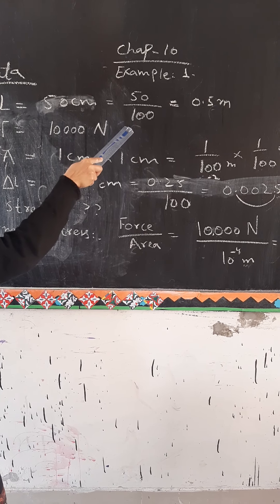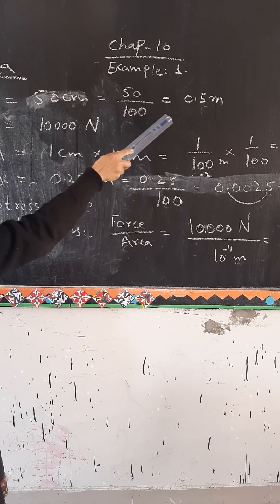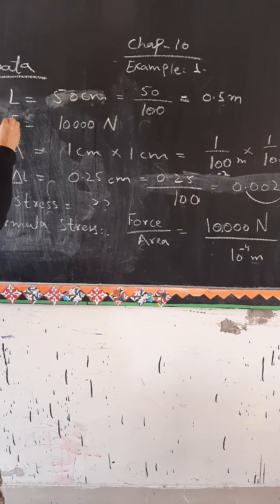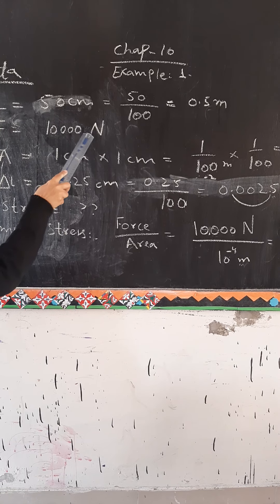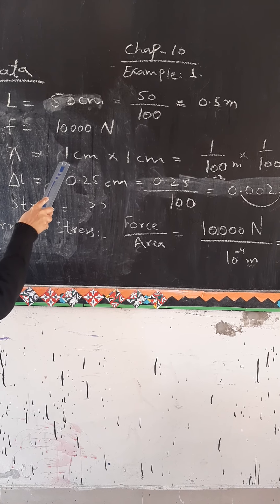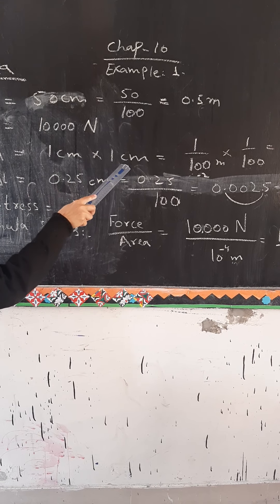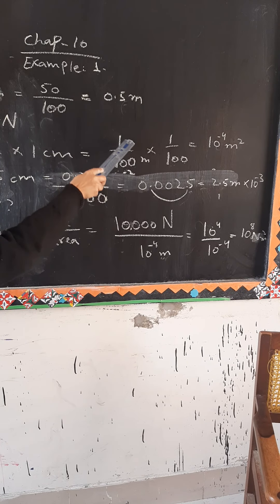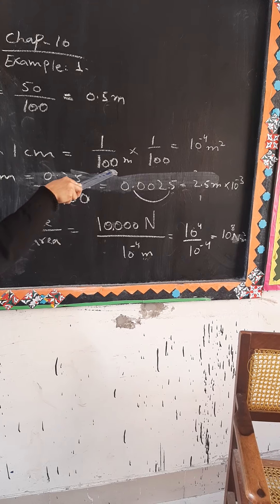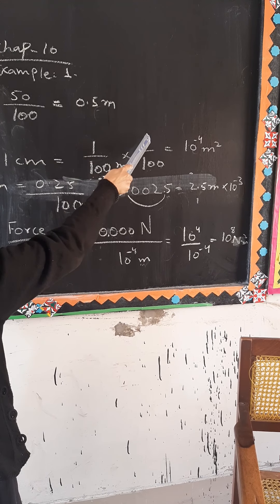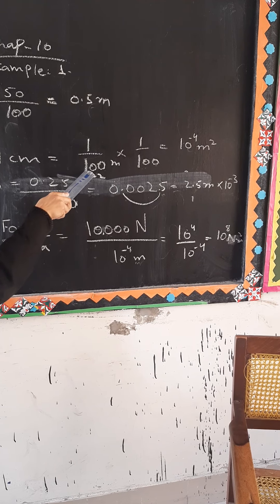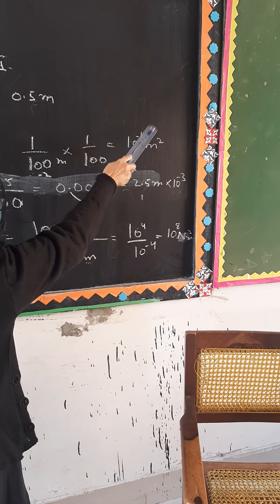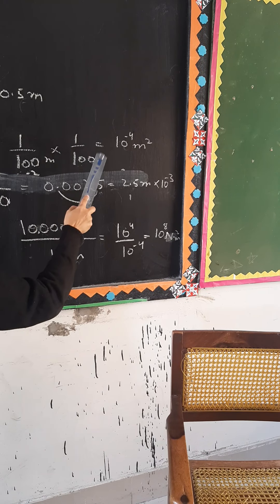It is 50 cm, divide by 100 to convert to meters. The force is 10,000 Newtons. The area is 1 cm times 1 cm. In meters, 1 cm times 1 cm equals 10 to the power minus 4 square meters. So that is meter to centimeter conversion.